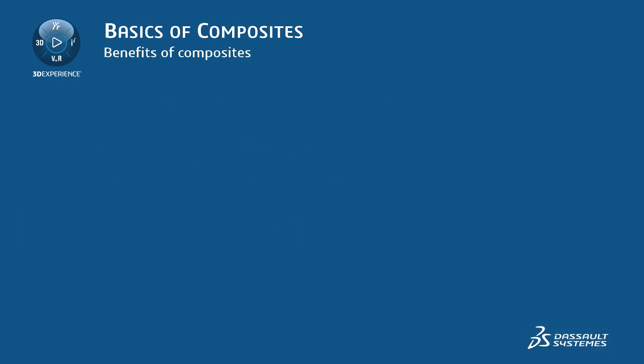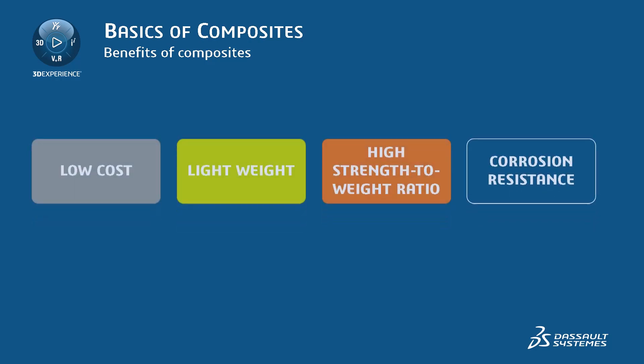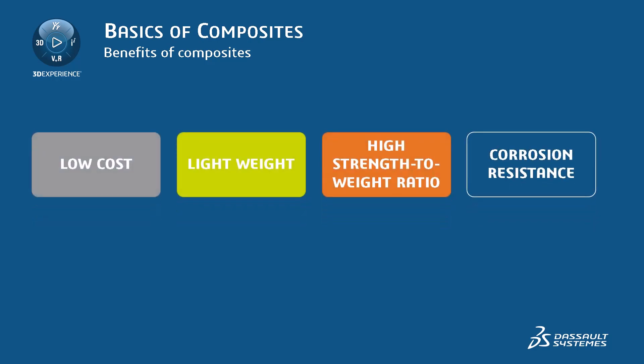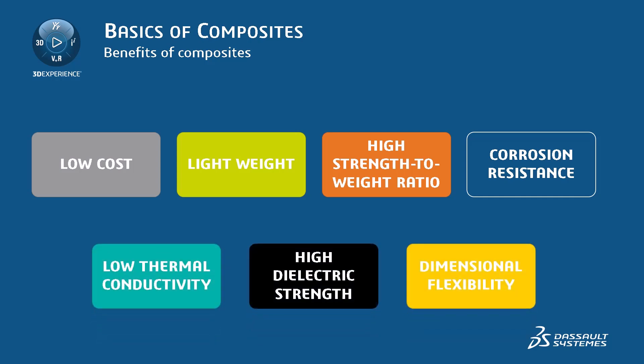The use of composites has many benefits. The purpose of varying matrix and reinforcement properties is to create a material that can exhibit either low cost, low thermal conductivity, light weight, high dielectric strength, high strength-to-weight ratio, dimensional flexibility, and corrosion resistance, or any combination of those properties.